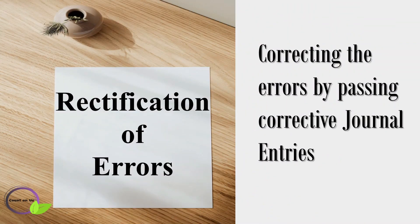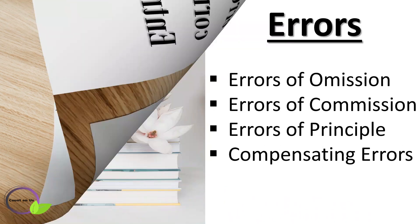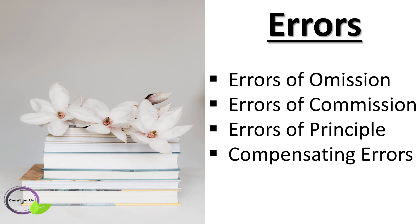In this lesson, we are going to be doing briefly about the rectification of errors in accounting. Accounts are prepared by accountants. A human being is likely to commit mistakes at the time of recording and posting in the books of accounts. However, such errors are located after some time and should be corrected by passing a corrective journal entry, which is known as rectification of errors. The important thing is the errors, whether affecting the trial balance or not, must be detected and rectified.